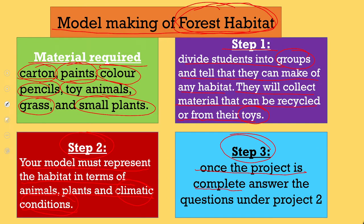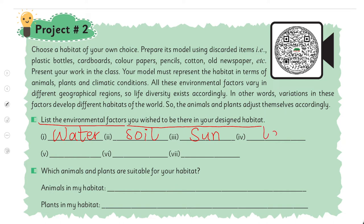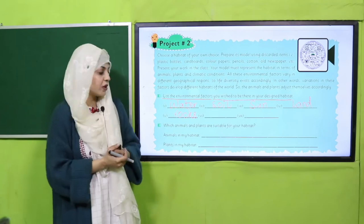Once the project is complete, answer the questions under project number two. Below project number two, some questions are given. Here you can see: list the environmental factors you wish to have in your designed habitat. Whatever environmental factors you think should be in your habitat - like water, soil, sun, land, rocks - these are all different types of environmental factors.